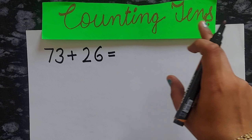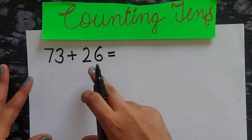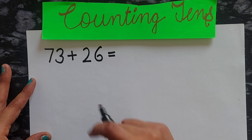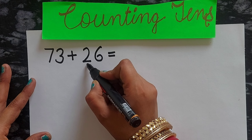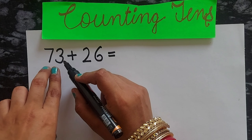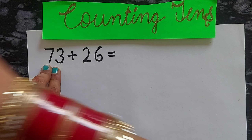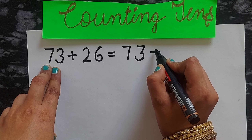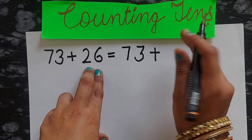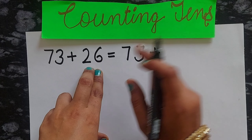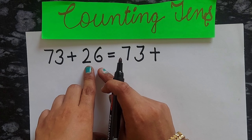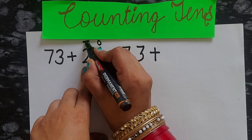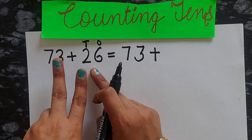Now we will do the third method: counting tens. Counting tens means you divide the second number into tens. You can see how many tens are there in the number — there are two tens. First, we write the same first number down.